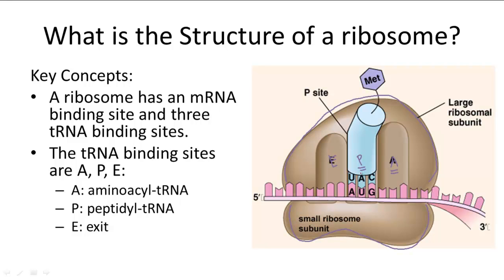As it donates its amino acid, the next tRNA will enter site A. Once it releases the amino acid in the P site, it moves on to the E site and exits the ribosome. It's kind of like an assembly line — each site performs a specific function.